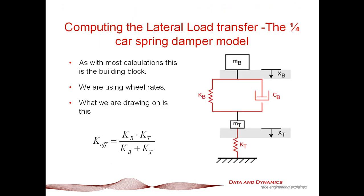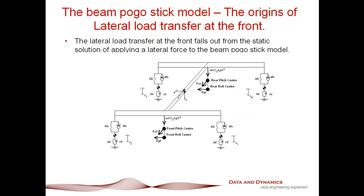The first step in calculating our lateral load transfer distribution is going back to the quarter car model approximation of the race car. In particular, what we're using is that the effective spring rate is basically the spring rate multiplied by the tire spring rate divided by KB plus KT. In this case, KB is going to be a combined spring rate of our main spring and our roll spring. It also goes without saying, just going back to our picture of our beam pogo stick model, all of the numbers here we're looking at are in wheel rate. Obviously, if you've got motion ratios you need to take into account, you need to take that into account.